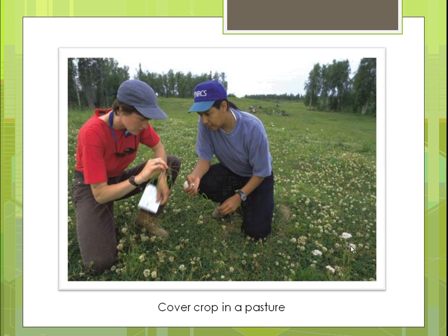Here's a picture of conservationists going out into a pasture looking at a cover crop they put in. Sometimes they're just grasses in a pasture, but this one actually has clover. The animals will eat that clover, and they're looking to see how it's doing.